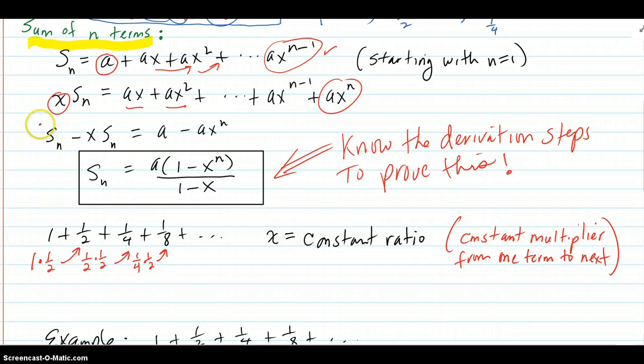When you subtract them, Sn minus x times Sn, everything is going to get cancelled out, all these terms, this one with this one. The only thing that's going to be remaining is the a from the first one, and the ax to the n.